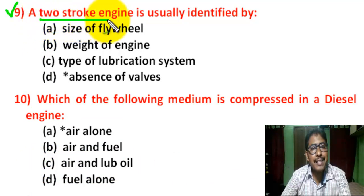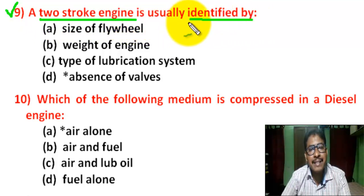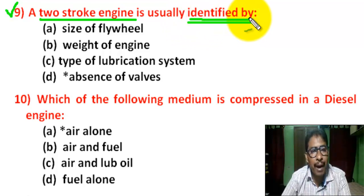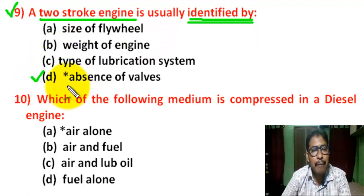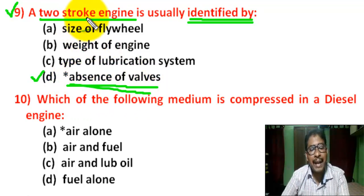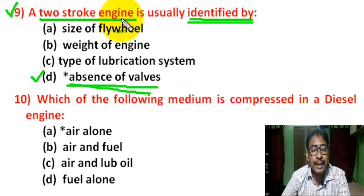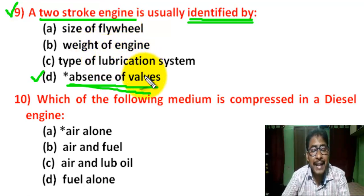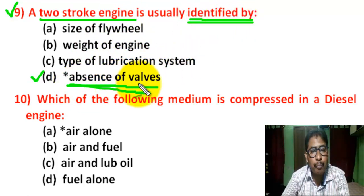Question number 9: A two-stroke engine is usually identified by — there are four options. Correct answer is D — absence of valves. A two-stroke engine does not require valves. In two-stroke engines there are ports: transfer port and exhaust port. So it is identified by the absence of valves.